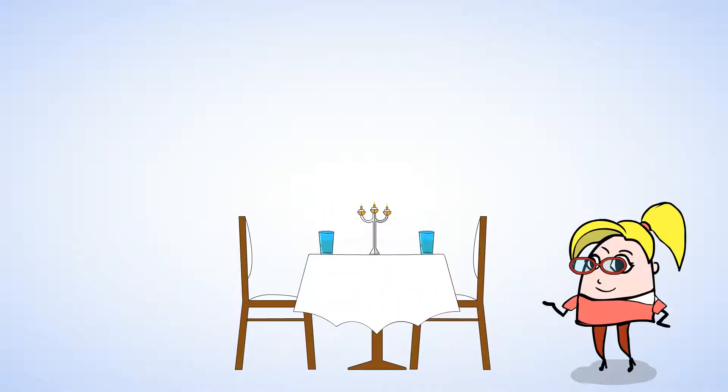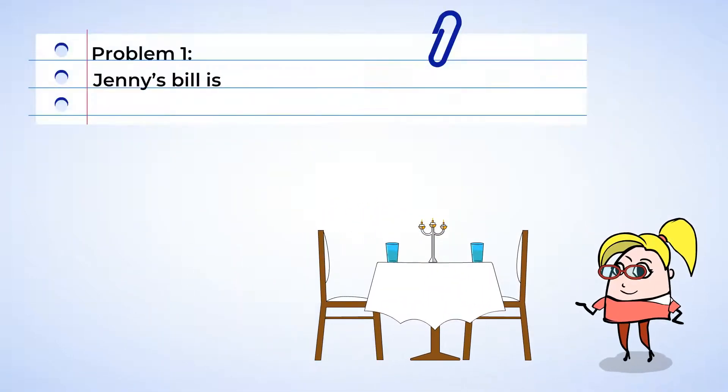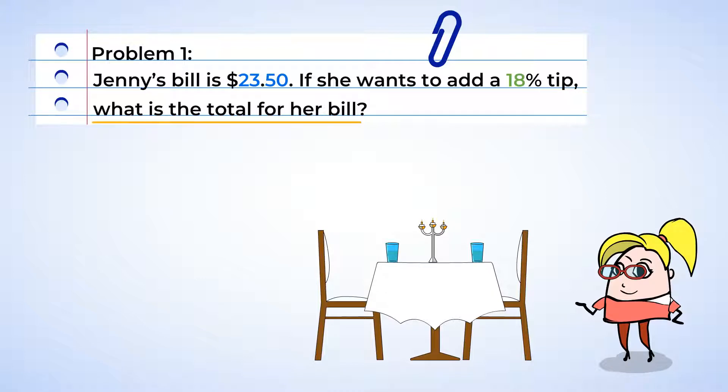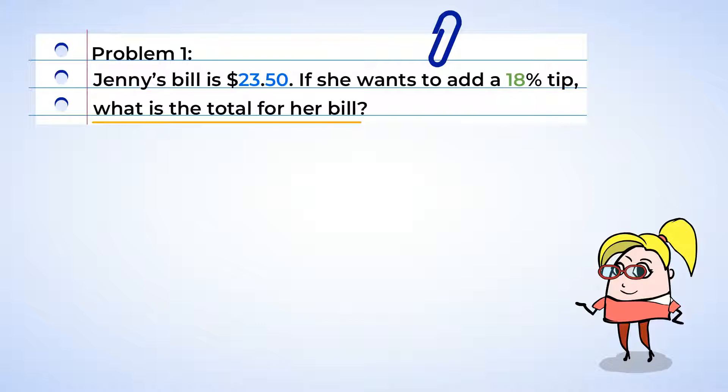Jenny just finished eating at a restaurant. The bill is $23.50 and she wants to add an 18% tip. So, what's the total for the bill? Let's see. To find 18% of the bill, we would need to multiply her total bill of $23.50 by the 18%. Now we can set up the expression $23.50 multiplied by 18 hundredths.